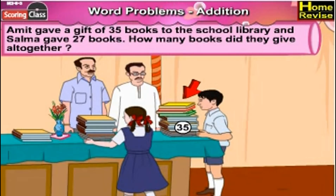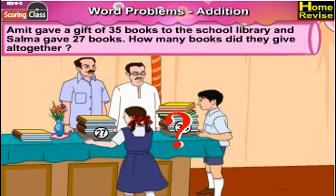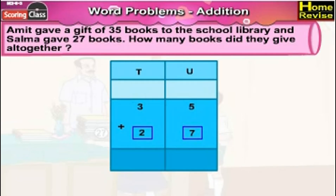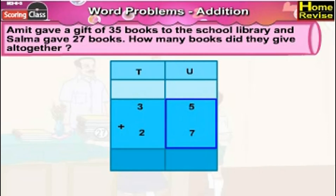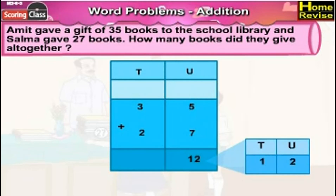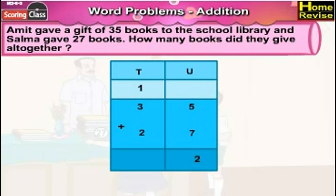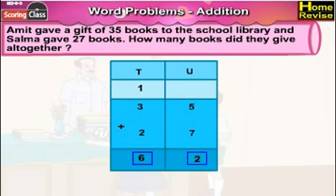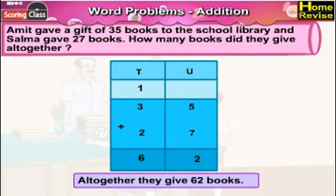Amit gave a gift of 35 books to the school library and Salma gave 27 books. How many books did they give altogether? Amit gave 35 books and Salma gave 27 books. Under units place we have 5 units plus 7 units, and under tens place we have 3 tens plus 2 tens. 5 units plus 7 units is 12 units — write 2 in the units column and carry forward 1 in the tens column. In the tens column we have 1 ten plus 3 tens plus 2 tens, that is 6 tens. So it is 6 tens plus 2 units, which means 35 books plus 27 books are 62 books. Altogether they gave 62 books.